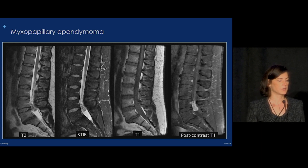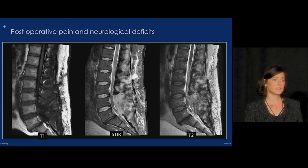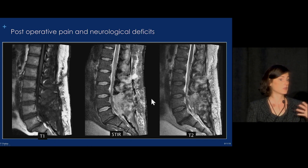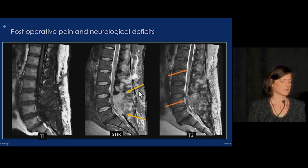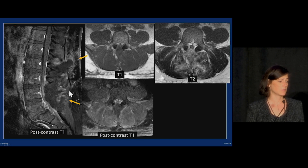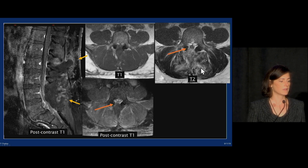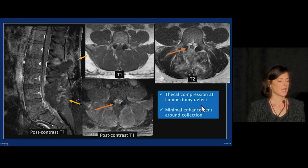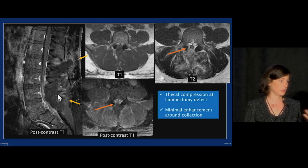Here's a patient who presented with a myxopapillary ependymoma that was resected. Postoperatively, they had pain and neurologic deficits. On MRI, there's a large laminectomy defect with material in it. The conus looks fine but the nerve roots are bunched together. On post-contrast imaging, this is an ugly-appearing resection, but enhancement around early post-operative sites is completely normal and can be quite florid. The critical finding is material extending from the resection cavity into the epidural space, compressing the thecal sac. The patient was taken back to OR urgently, and this was all epidural hematoma causing mass effect.